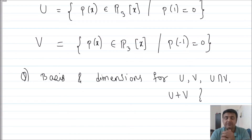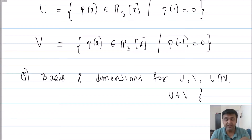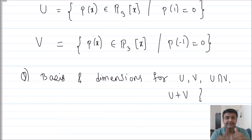You can assume that they are subspaces, but if you want to prove why they are subspaces, I have recorded one lecture on that — the link is in the description. For this question, U and V are subspaces of P3(x), which is the space of all polynomials of degree at most 3, where x is the variable.